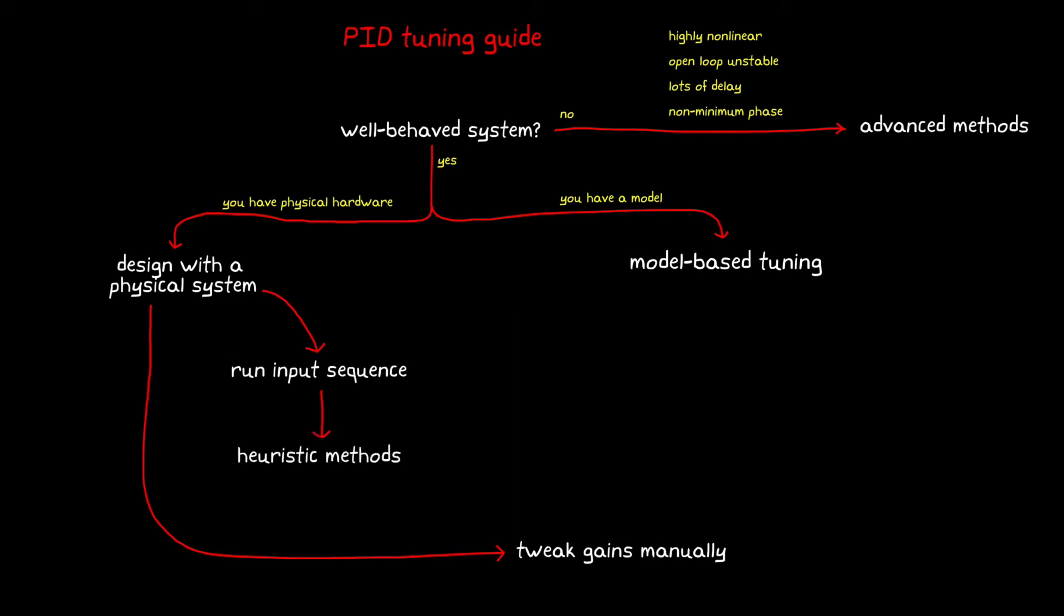From the response, you can use a heuristic technique like the Ziegler-Nichols or Cohen-Kuhn method. These methods are nice because you don't need a model. You just need to measure certain aspects of the response, like the time constant or oscillation period, and then use that value to calculate an initial gain set.